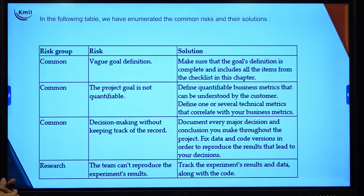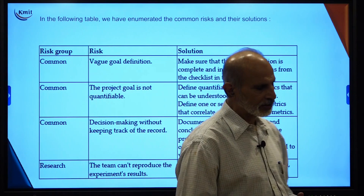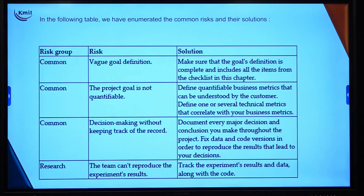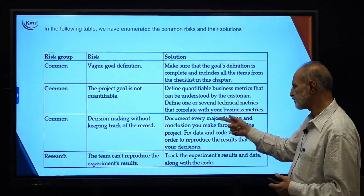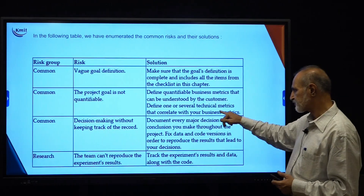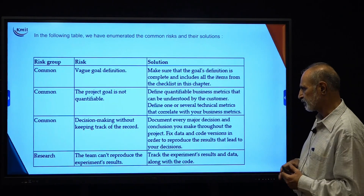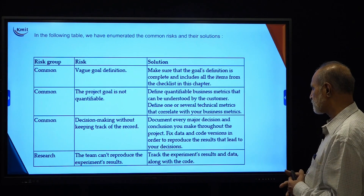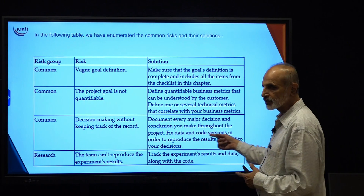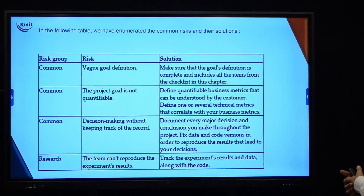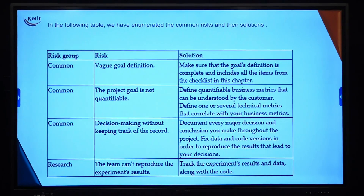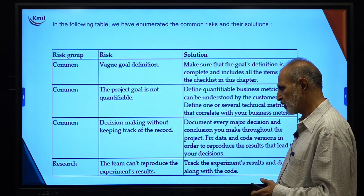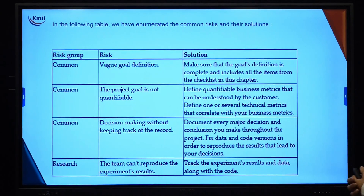Business metrics are different, and our data science metrics must correlate with them. Third, decision making without keeping a track of the record — document every major decision and conclusion throughout the project, and fix data and code versions in order to reproduce the results that led to your decision. Your fixed data and code revisions must be documented well, so that you have fewer problems and less risk. These three are under the common risk area.